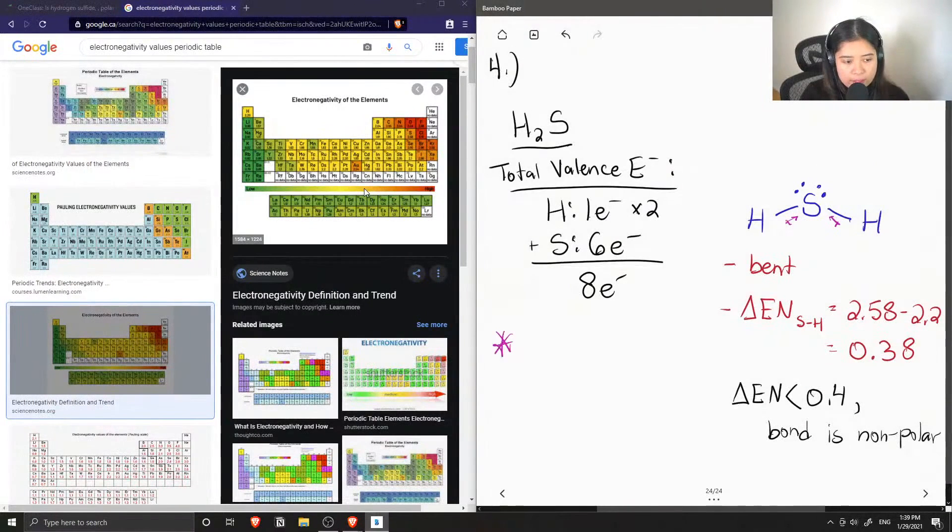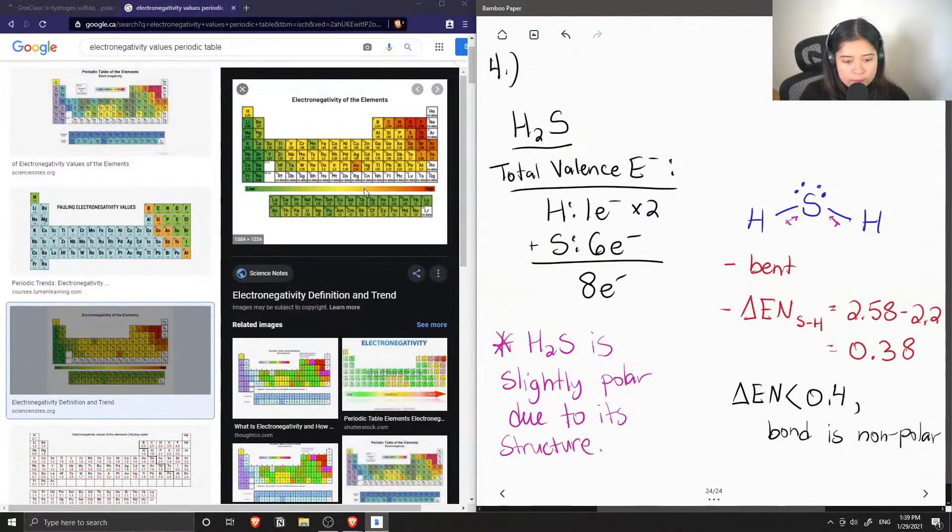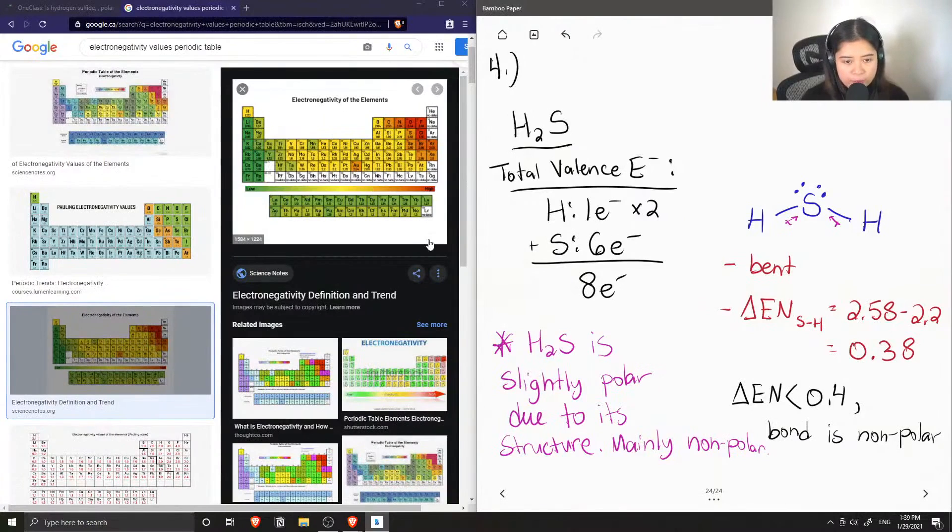So I would say that for this question H2S is considered slightly polar just due to its structure, but mainly nonpolar because the bonds that comprise this molecule are nonpolar. So if we have nonpolar bonds then that means we have a nonpolar molecule.